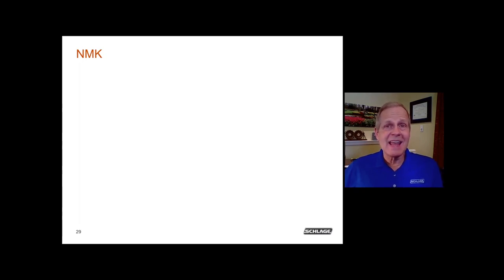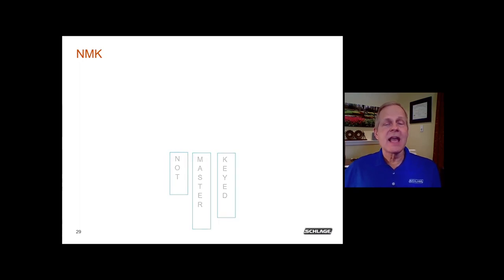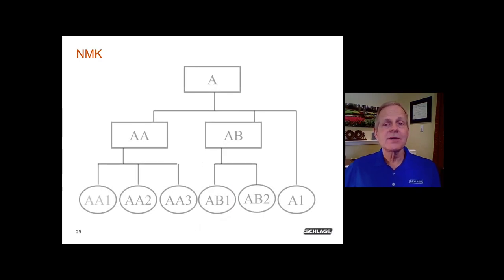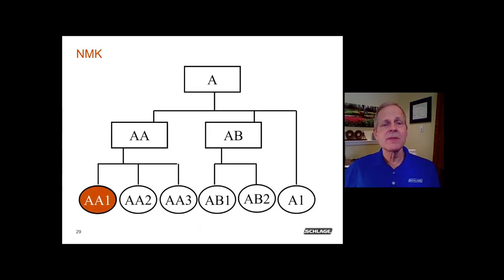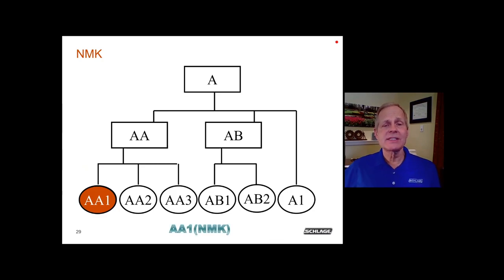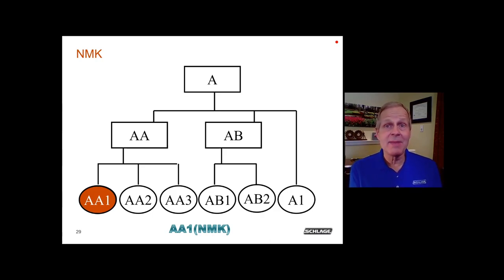Another term to know is NMK — not master keyed. There will be no master key operating that cylinder. In a three-level system, an NMK cylinder is indicated in parentheses next to the change key symbol. No master pins are added, so only the specific change key — such as AA1 — will operate. The AA master and A grand will not work. This is used for doors requiring extra security, such as certain storage rooms.